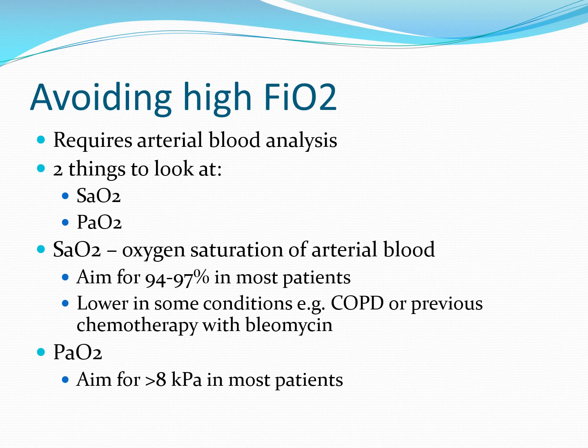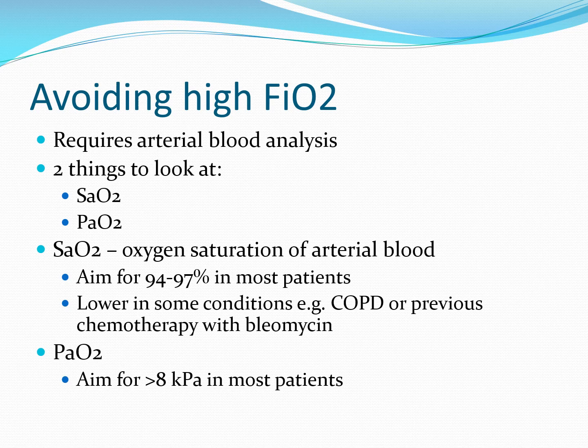Avoiding unnecessarily high fractions of inspired oxygen requires analysis of arterial blood, looking at two things. First, the oxygen saturation — the SaO2. Most patients will be absolutely fine with a target saturation between 94 and 97%; we don't need to aim for 99 to 100% for the vast majority, and we should aim considerably lower in some, such as patients with COPD or those who have had previous chemotherapy with drugs like bleomycin. We also look at PaO2, the partial pressure of oxygen in arterial blood, typically aiming for greater than 8 kilopascals in most patients.